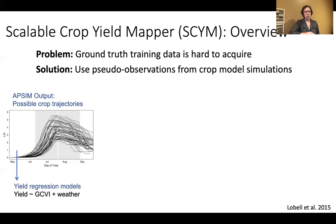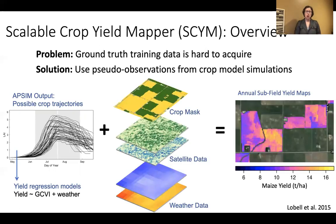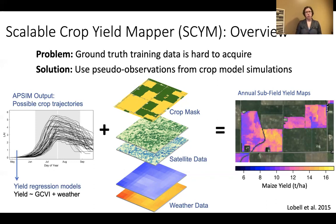What that looks like is this: we parameterize a bunch of different crop simulations to capture the key features of the study system, giving us all these possible crop trajectories. From that, we derive simple yield regression models predicting yield from satellite greenness or GCVI along with weather. When you have a crop mask, satellite data, and gridded weather data set, you can apply this on a pixel level to any region with any satellite system to give you annual subfield yield maps.